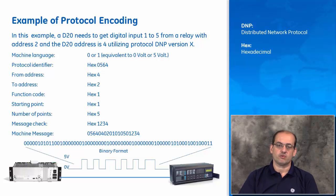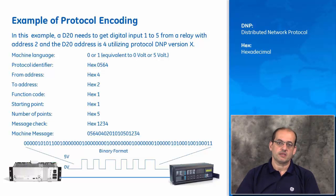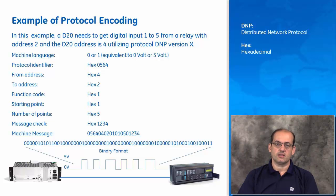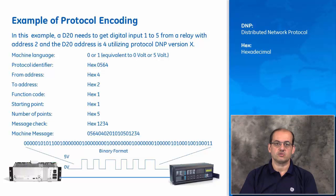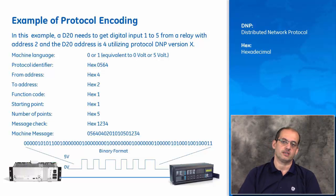Every message also contains a cyclic redundancy check (CRC) — a mathematical formula that calculates the message integrity. So in this case, that full message in hex would be: 056404020101051234. This hex message is then translated into machine language — 1s and 0s transmitted over the wire using voltage sensing levels of 0 to 5 volts — and translated at the other end from voltage levels into bits and bytes into a meaningful message for the device to take the appropriate action.